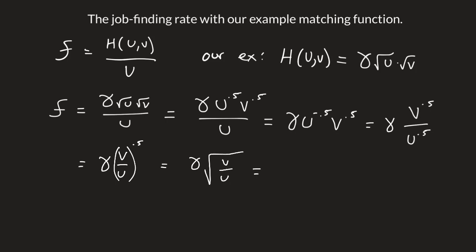The last thing we'll do is bring this back to market tightness. Remember, market tightness is vacancies over unemployed. So with our equation, our job finding rate equals gamma*sqrt(theta).